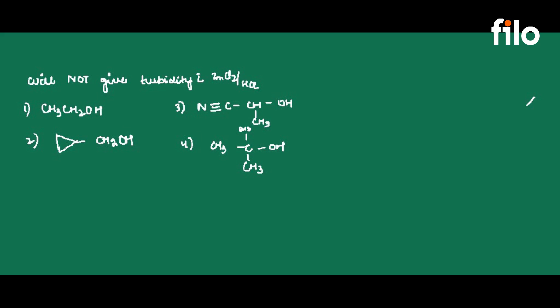Hi everyone. The question asks: which of these four alcohol options will not give turbidity with ZnCl2 and HCl? So what are ZnCl2 and HCl?